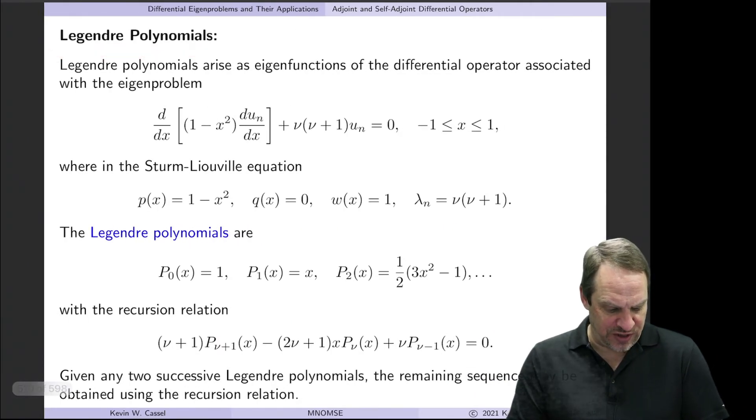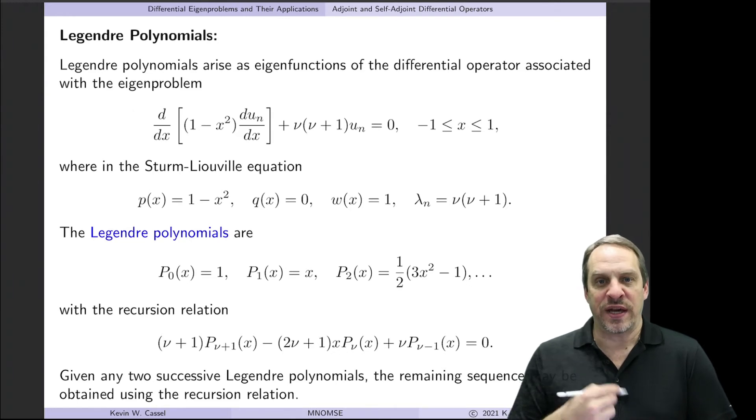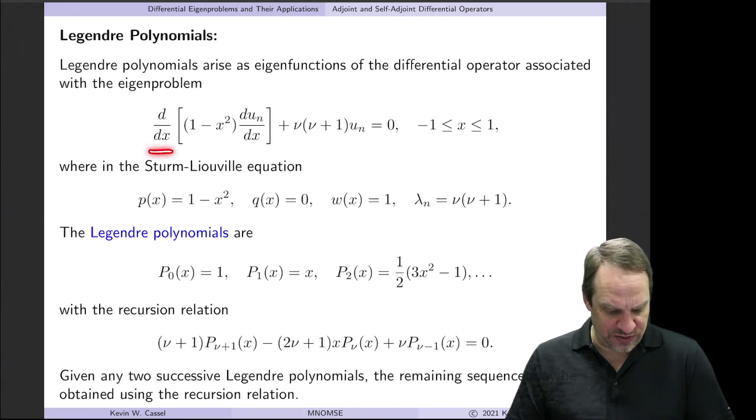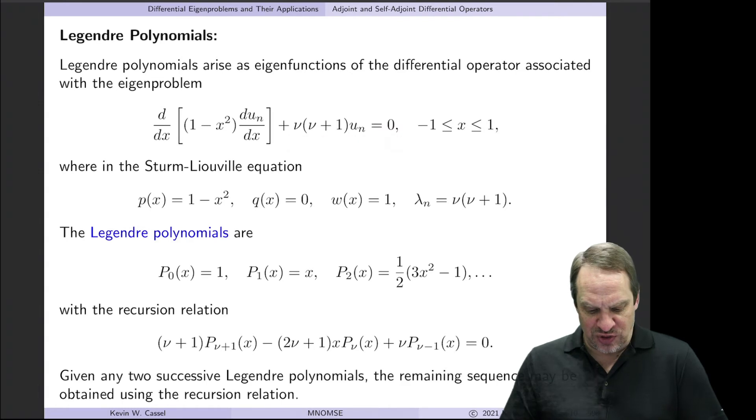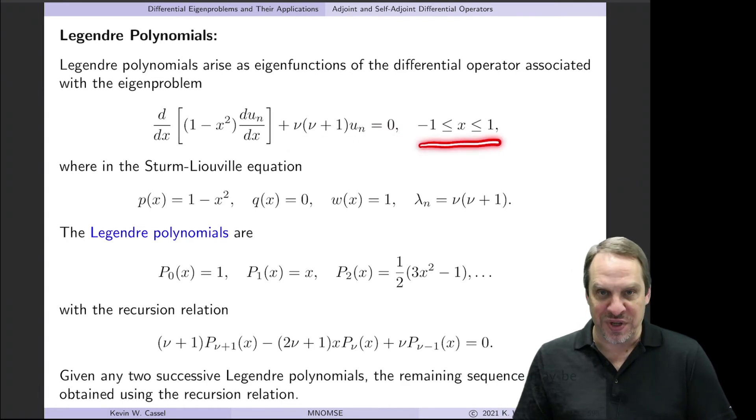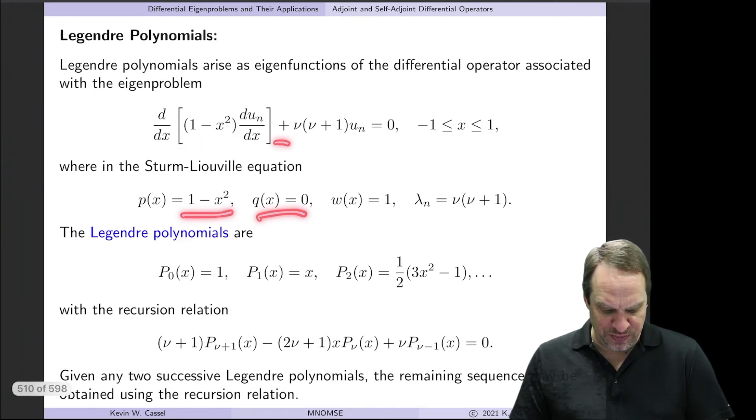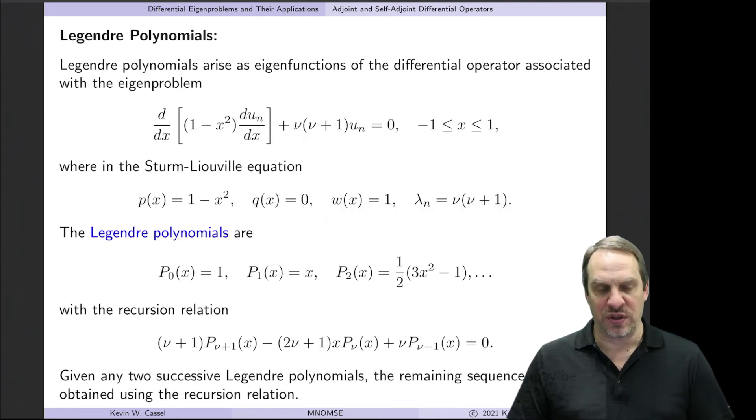Legendre polynomials. So here again is the differential eigenproblem that produces the Legendre polynomials as the eigenfunctions. The d/dx of the quantity one minus x squared times du/dx plus nu times nu plus one times u is equal to zero. Now the interval is minus one to one. So you can see that p is the one minus x squared, q, there is no q term, w is one, and then lambda is nu times nu plus one. When you get the eigenfunctions for this differential eigenproblem,